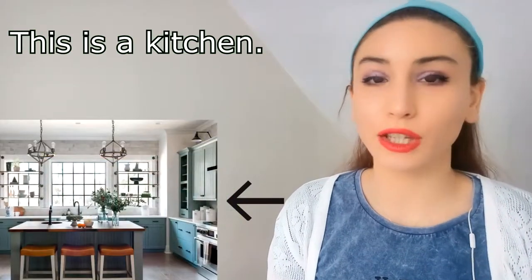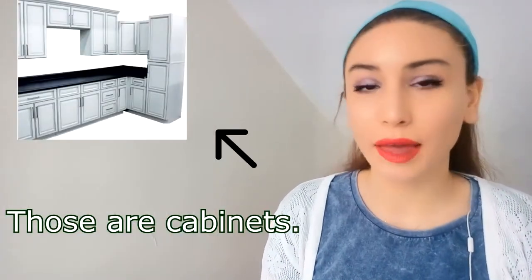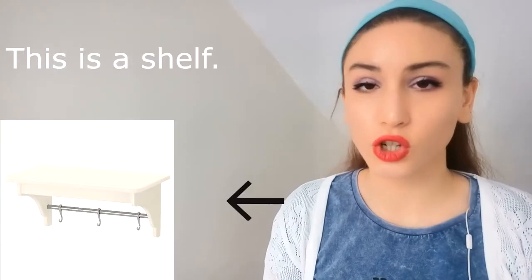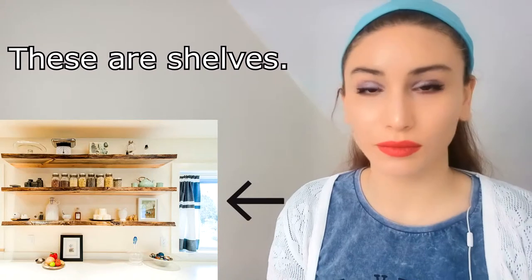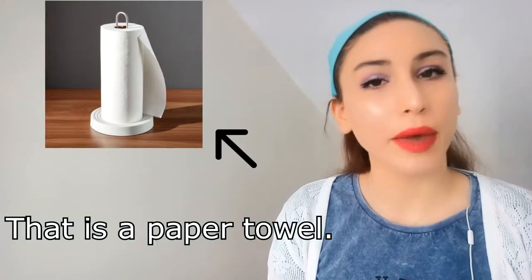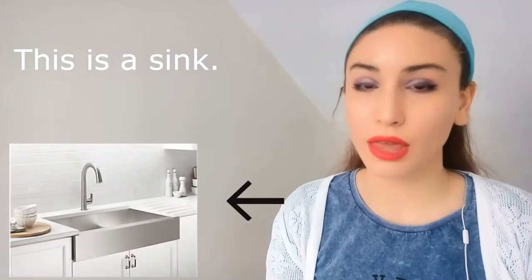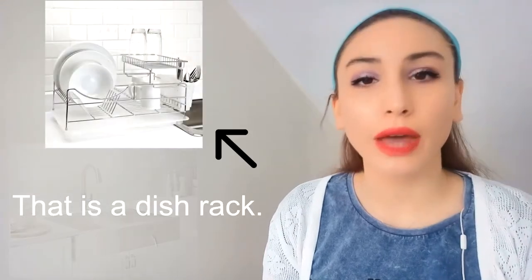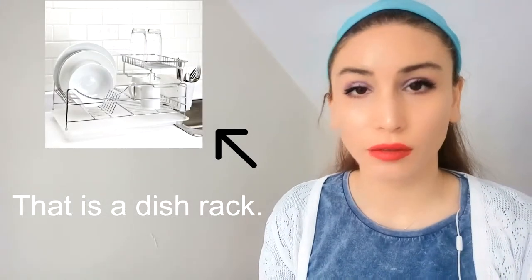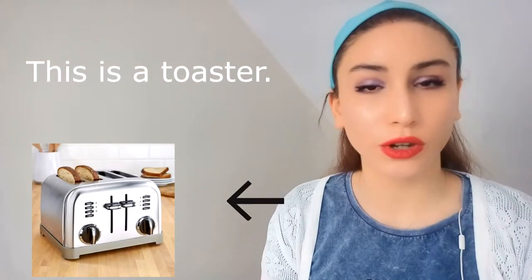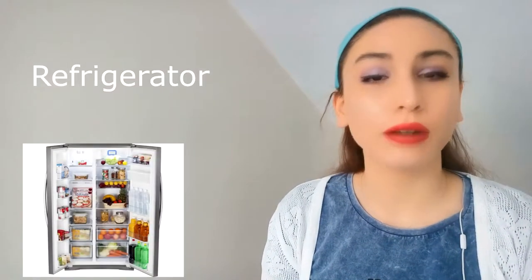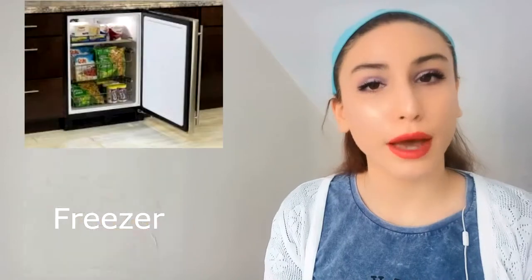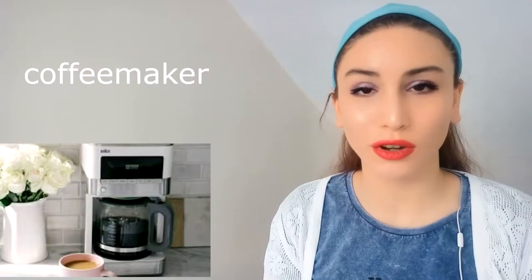This is a kitchen. Those are cabinets. This is a shelf. These are shelves. That is a paper towel. This is a sink. That is a dish rack. This is a toaster. That is a dishwasher. This is a refrigerator. That is a freezer.